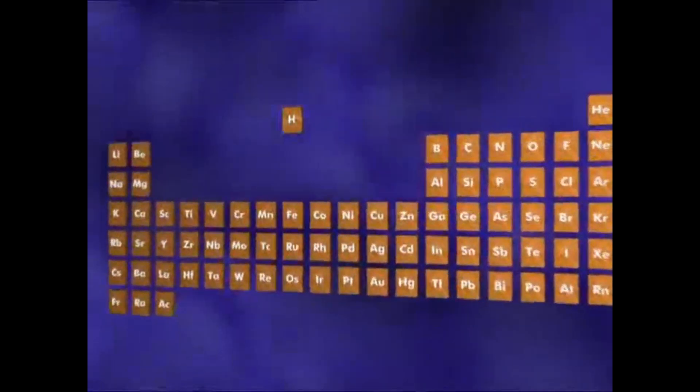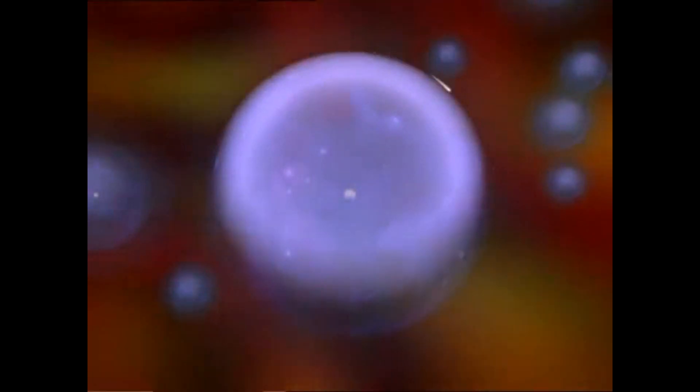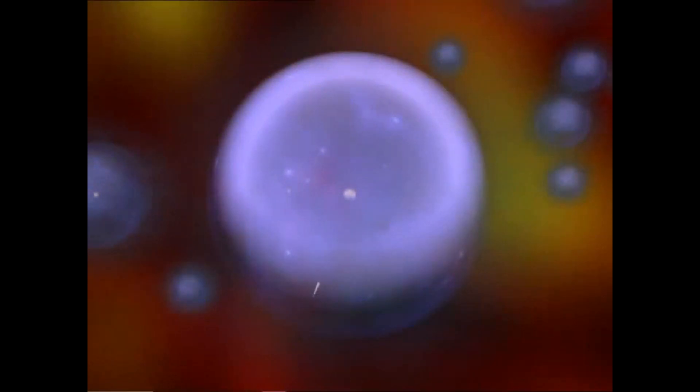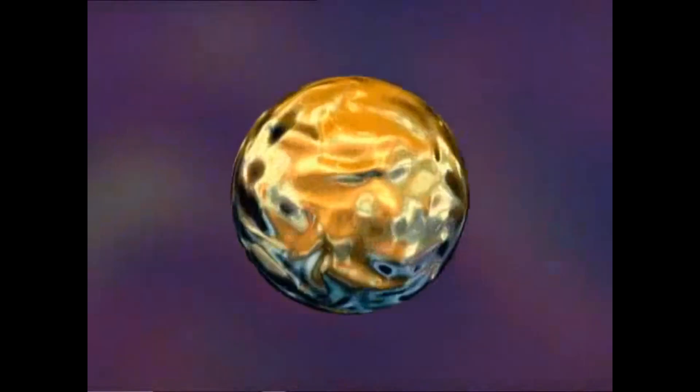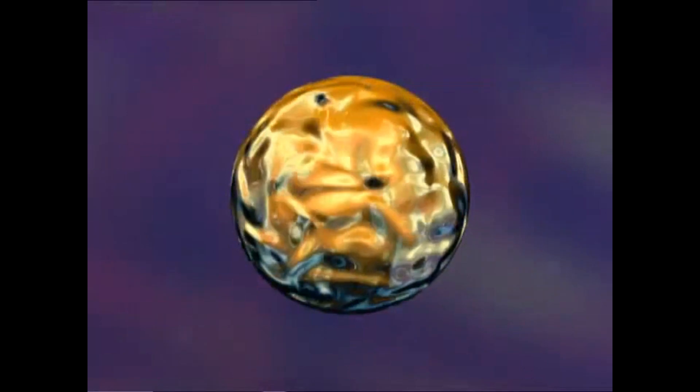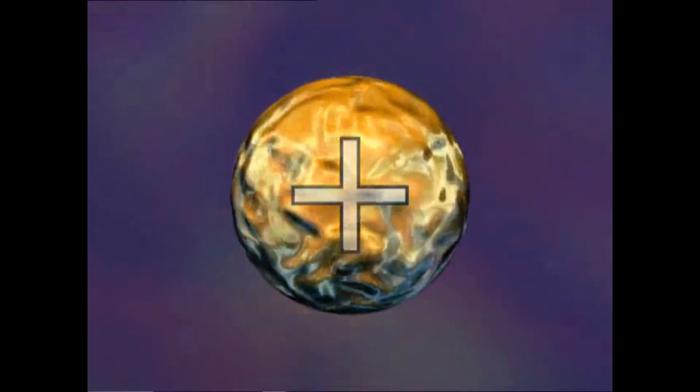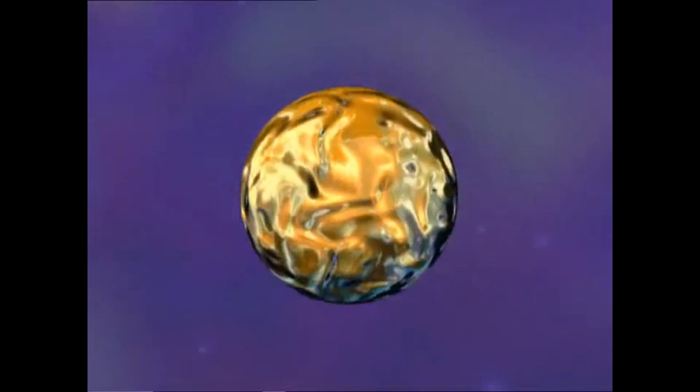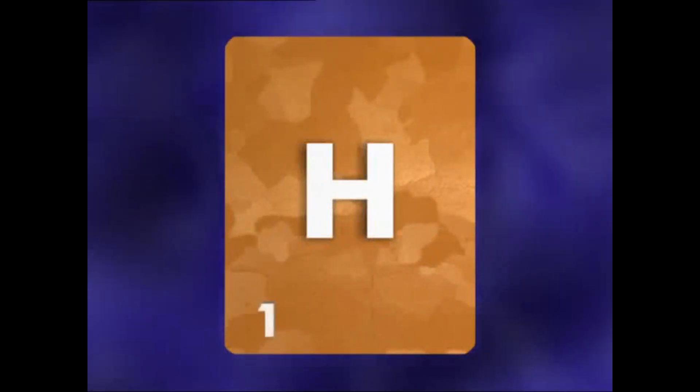Take hydrogen, the first element in the table. Orbiting around the outside of each hydrogen atom is one electron. And in the nucleus is one proton. Like all protons, it has a positive charge. Every hydrogen atom is the same. The atomic number is simply the number of protons in the nucleus. A hydrogen atom has one proton, so hydrogen's atomic number is one.